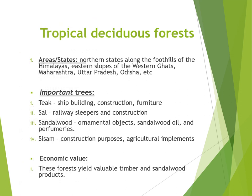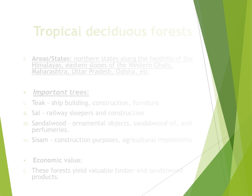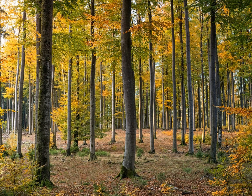Tropical deciduous forests are found in northern states along the foothills of the Himalayas, eastern slopes of the Western Ghats, Maharashtra, Uttar Pradesh, Orissa, etc. Important trees include teak, used for shipbuilding, construction, and furniture; sal, used for railway sleepers and construction; sandalwood, used for ornamental objects, sandalwood oil, and perfumeries; and sesame, used for construction purposes and agricultural implements. This forest yields valuable timber and sandalwood products.